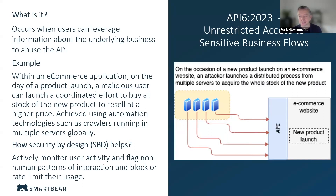For example, we would expect users to first browse the products, maybe see products organized by launch date, and then go into the details. But if we see a whole series of requests going straight to a specific product by ID — which is a fairly opaque identifier — we would know they're potentially using insider information to make those calls. That could indeed be a useful use case for the workflow specification.